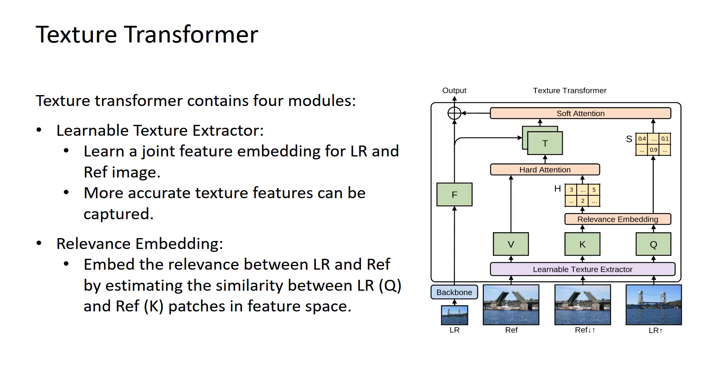The texture transformer contains four modules. The learnable texture extractor learns the joint feature embedding for LR and REF image to capture more accurate textures. Relevance embedding estimates the similarity between LR and REF.